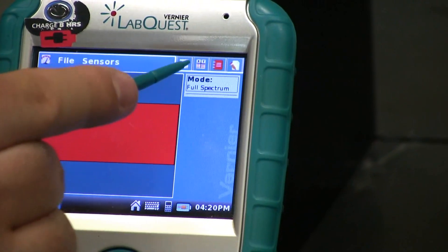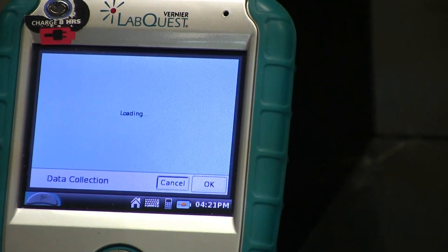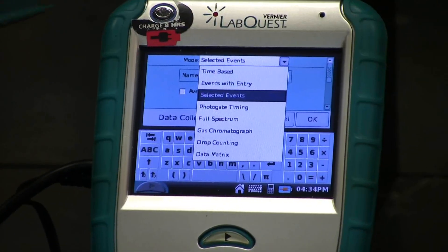While in the meter screen, click on Mode. You will then need to change the drop-down menu to Events with Entry.